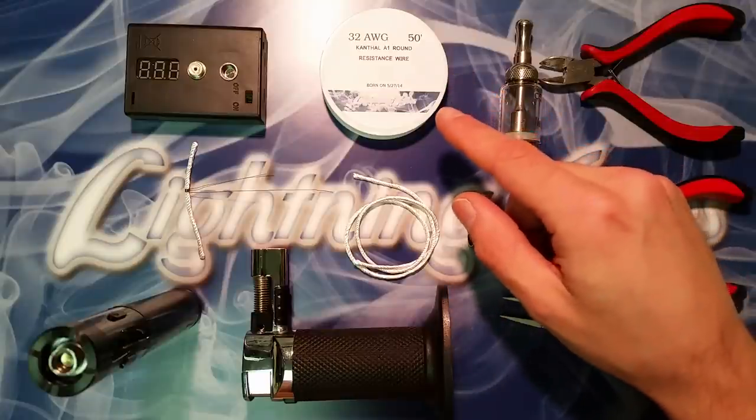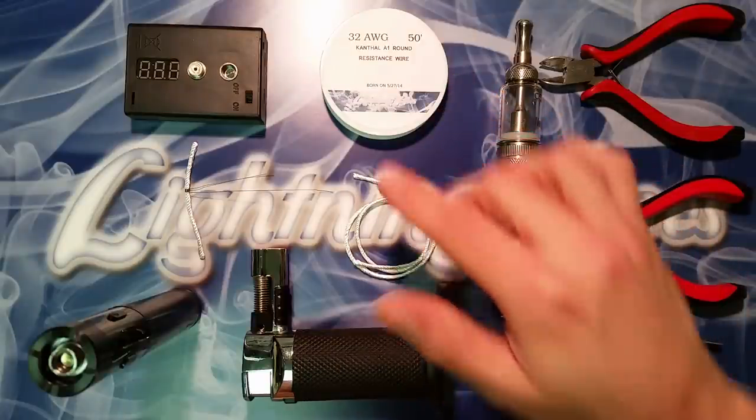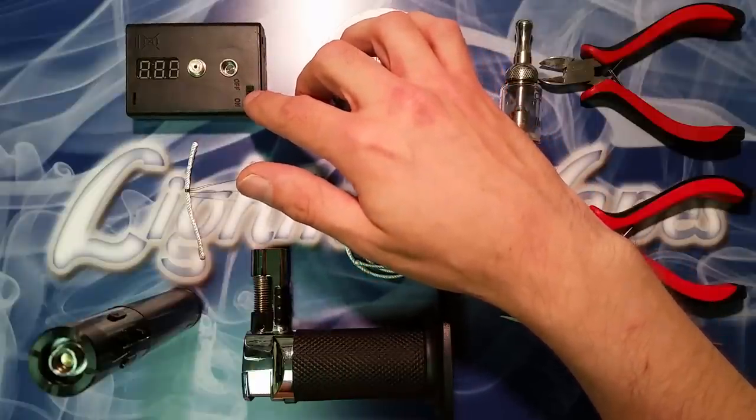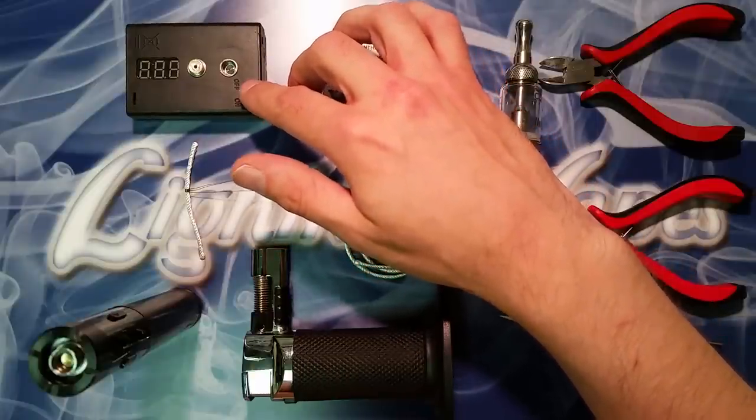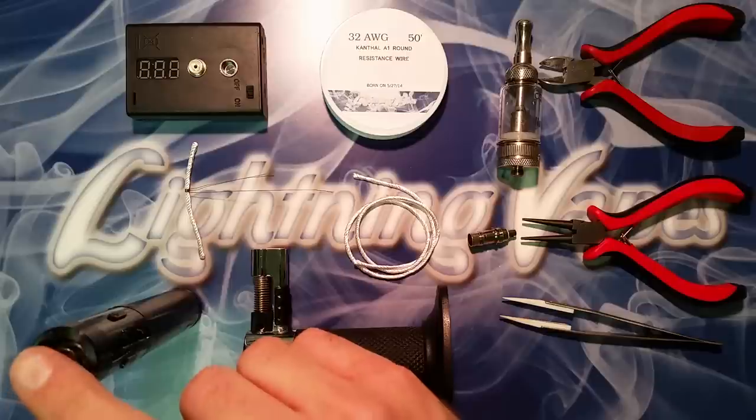We have some Lightning Vapes 32 gauge Kanthal along with some Lightning Vapes 2 mm silica wick, a cartomizer and atomizer ohmmeter that will help us make sure that there are no shorts in our coil head before we install that back onto the battery. Also, we'll be using the EVIC Supreme today.